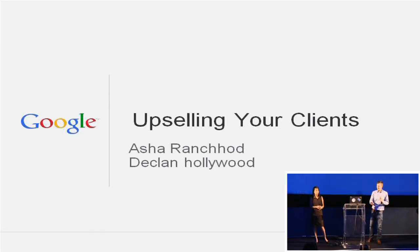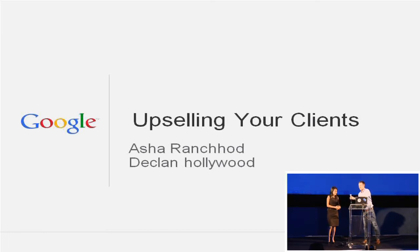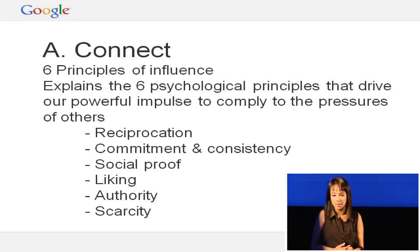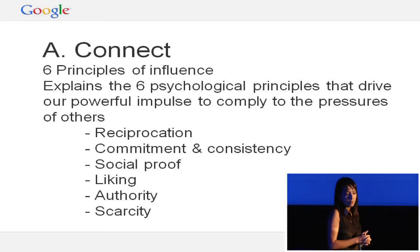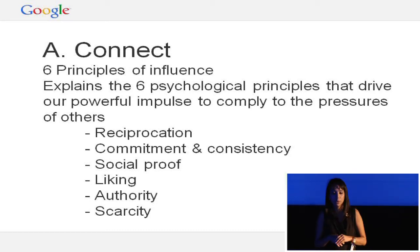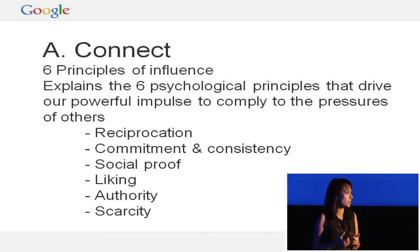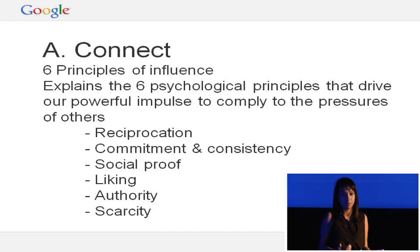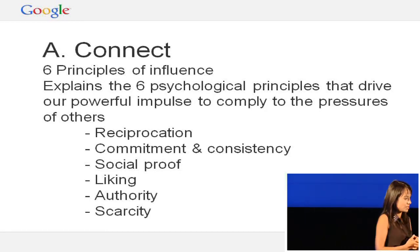I'm an account manager within the finance vertical at Google. The first C is basically all about building relationships, and the way we like to frame this at Google is around the six principles of influence. It's a psychological principle that has been researched quite a lot and used in many organizations. It's driven by building relationships that lead to creating the trust with your client in order to actually then ask for the business.